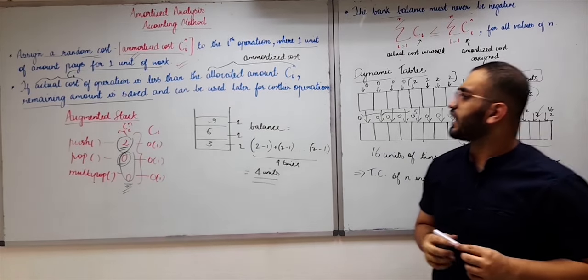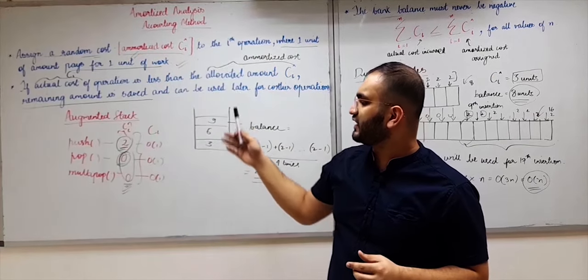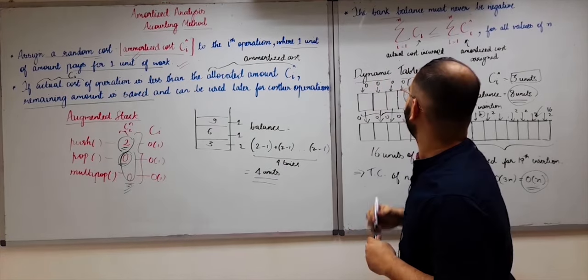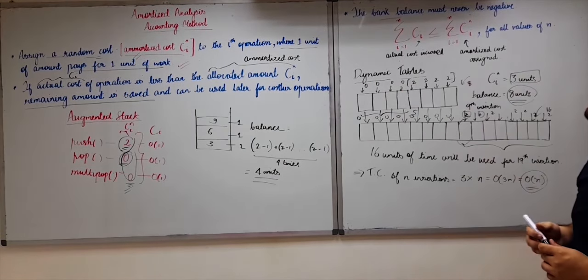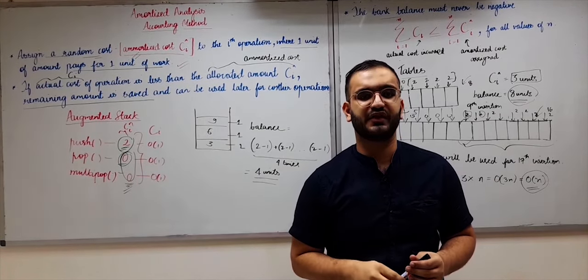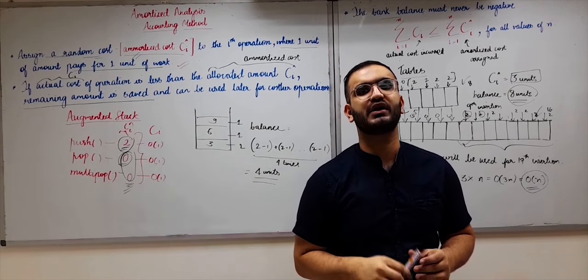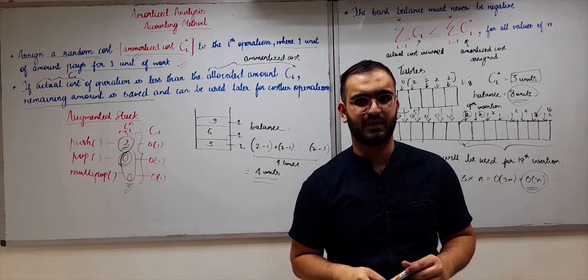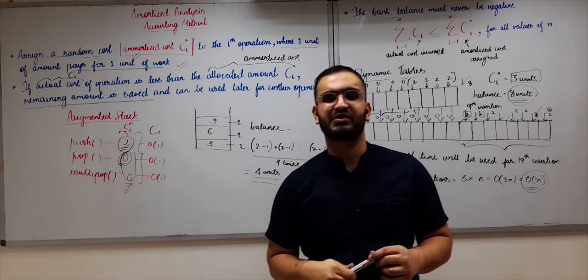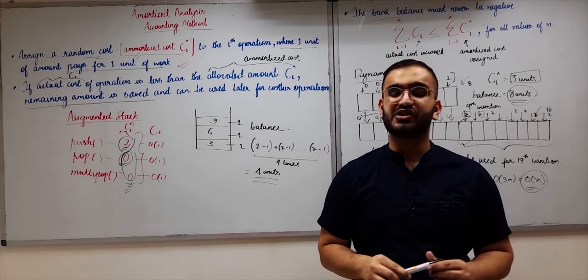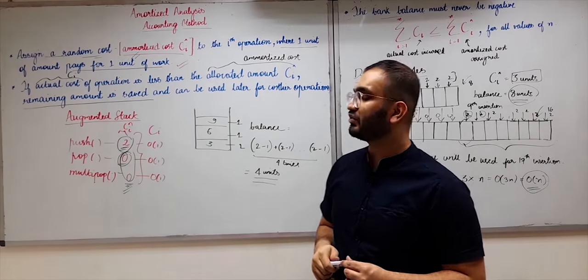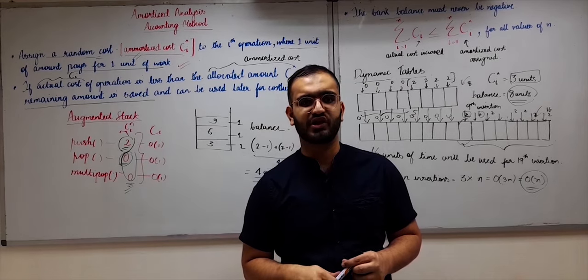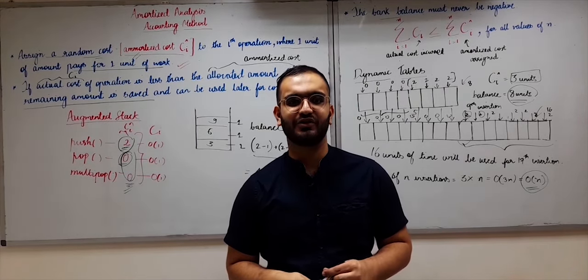That was all about the accounting method. I explained it first with the augmented stack example, then with dynamic tables. Stay tuned for the next video, where we will talk about the last method of amortized analysis: the potential method. Until then, subscribe to my channel and please share it as much as possible. Let me know in the comments if you have any suggestions or if you liked the video.